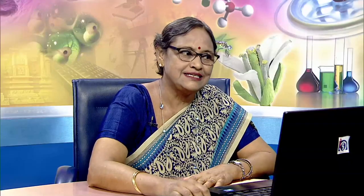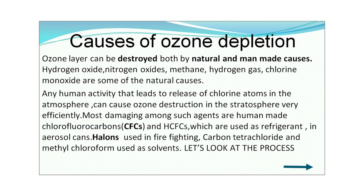A depiction shows the effect of disappearance of the ozone layer. If the ozone layer completely disappears, all harmful ultraviolet radiations from the sun would reach Earth and not only harm hundreds of animals and plants but also damage other structures. Next are the causes of ozone depletion.